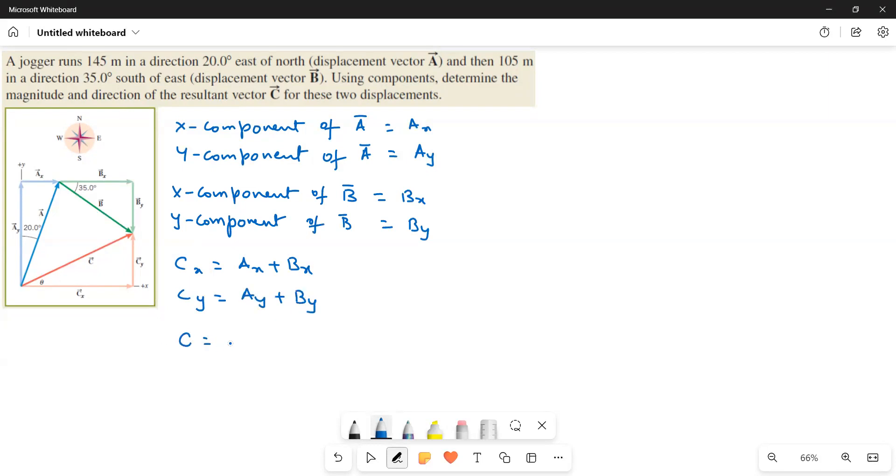And then C is equal to square root of Cx squared plus Cy squared. And then tan theta is equal to Cy by Cx and then theta is equal to tan inverse Cy by Cx.